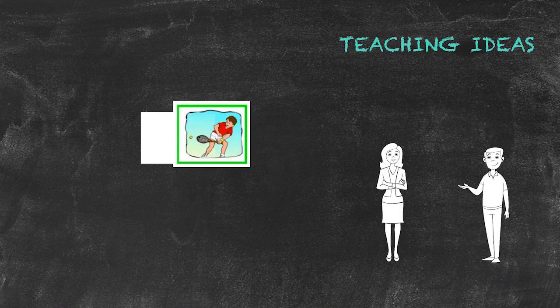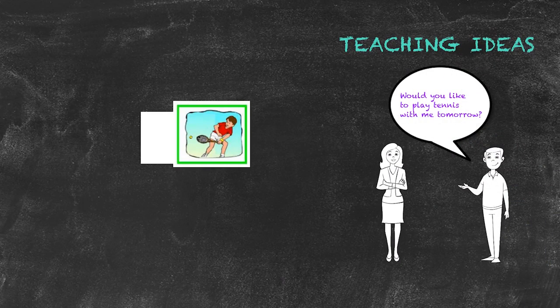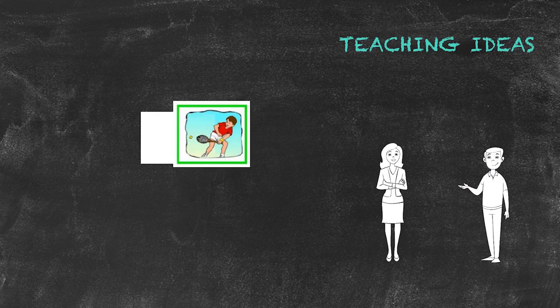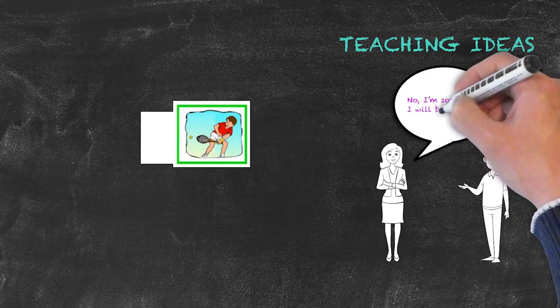So one student might pick this card up and say, would you like to play tennis with me tomorrow? The other student will be challenged to come up with an excuse as quickly as possible, which might be, no, I'm sorry, I'll be working.